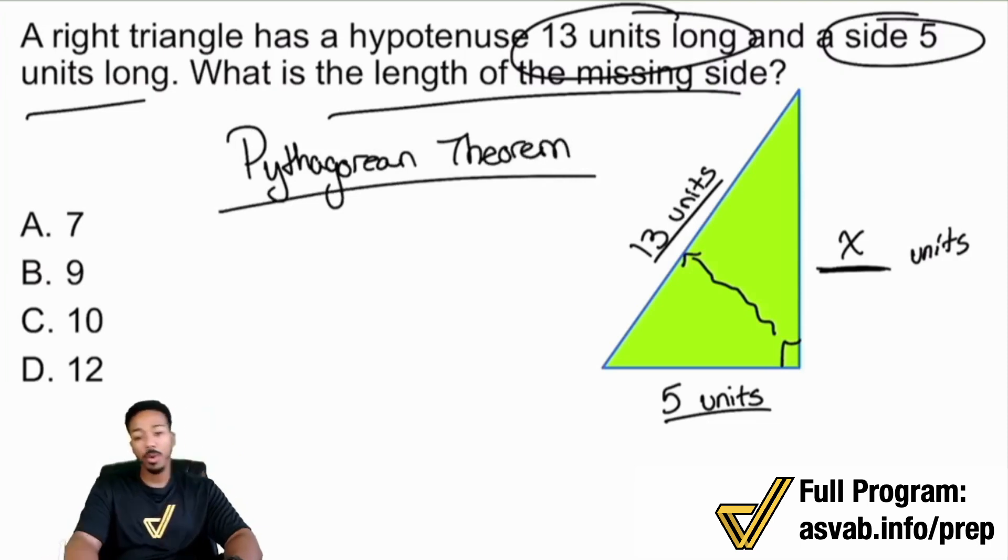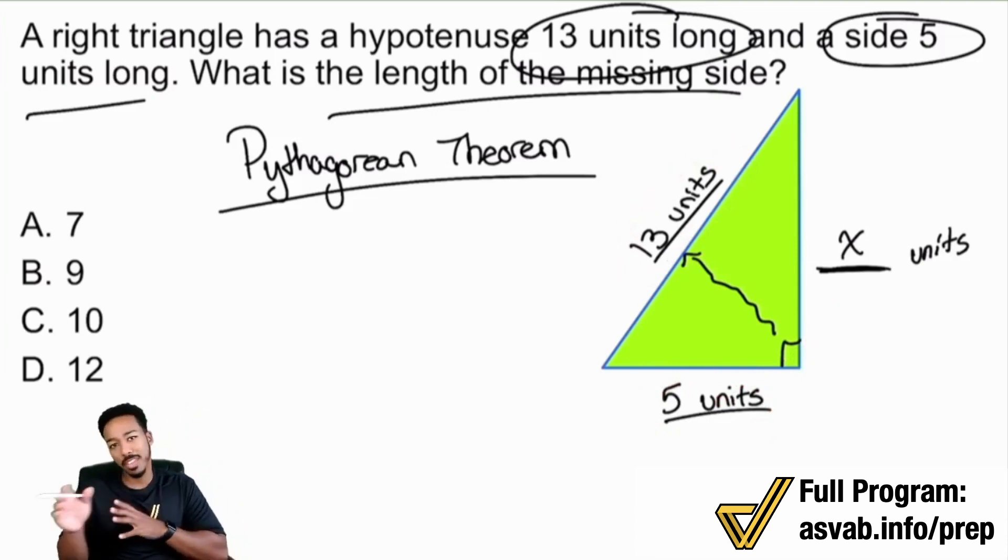One thing that I will suggest is checking to see if you have a Pythagorean triple. If you have a Pythagorean triple, this makes this problem like five seconds, you're done. So can we see that 13 is five times something, and then we have three and two times something over here. Or three, four, five, excuse me, is five, three or four times something. No, 13 isn't a multiple of five either. So this is not a Pythagorean triple.